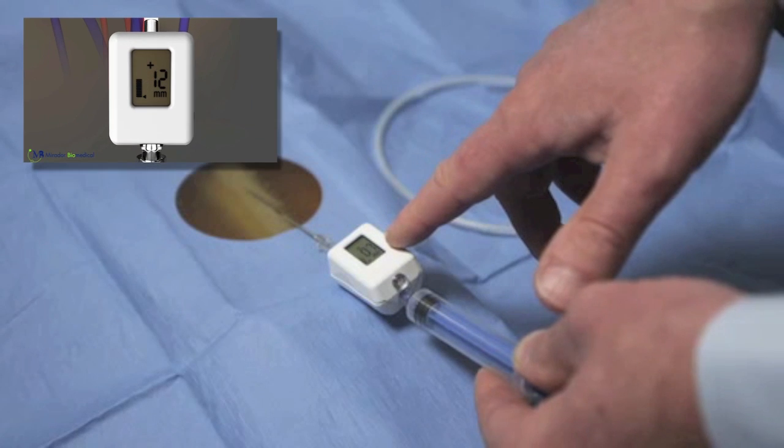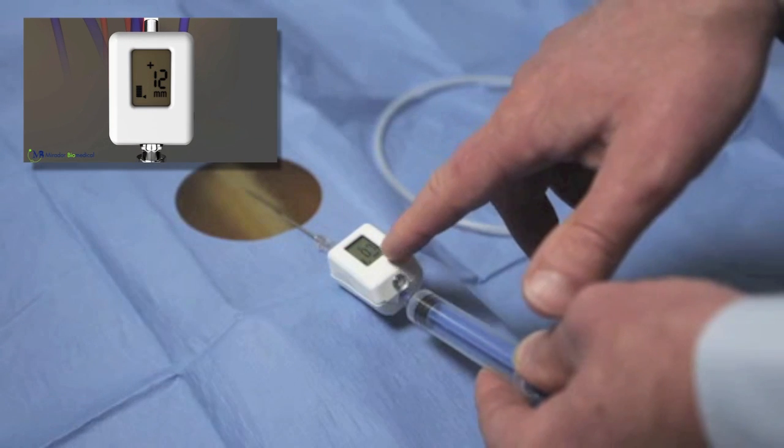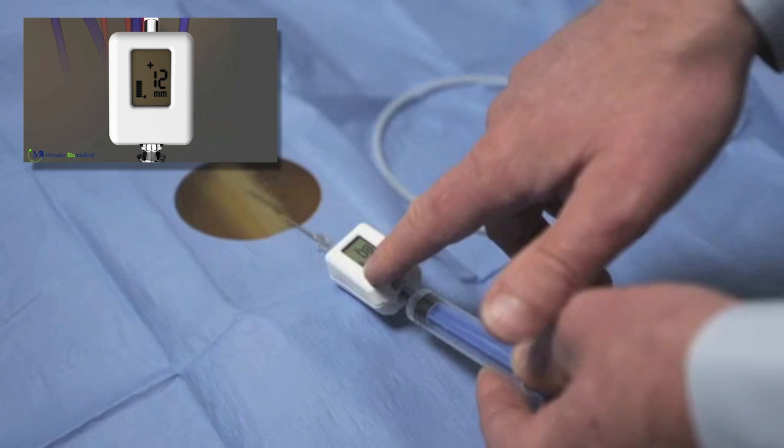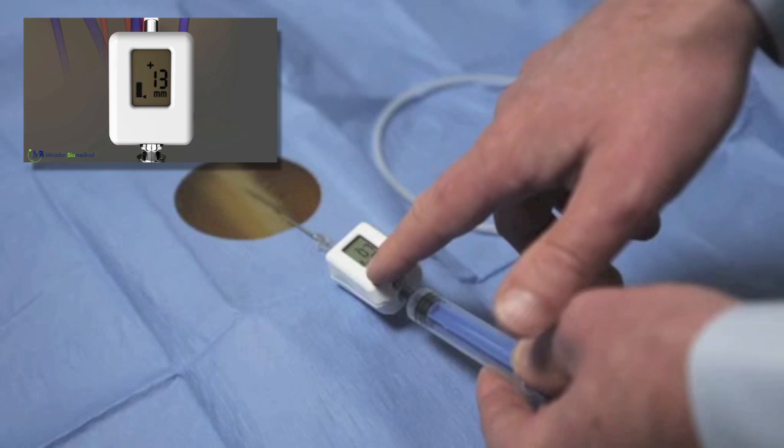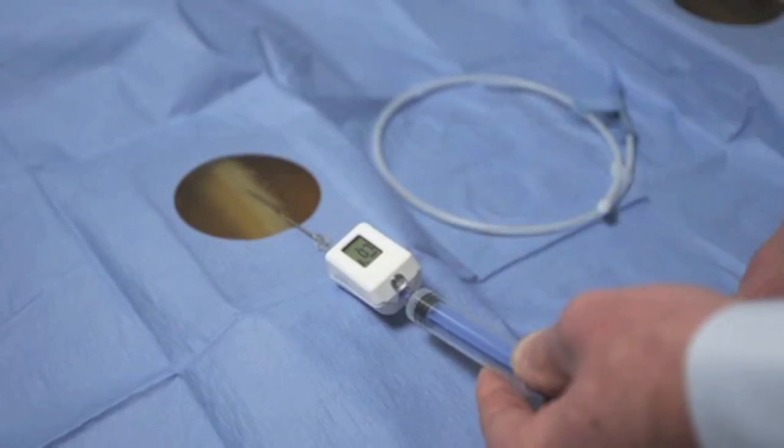You'll see the average pressure displayed as the number, and next to it you'll see a representation of the waveform, where you'll see respiratory variation.